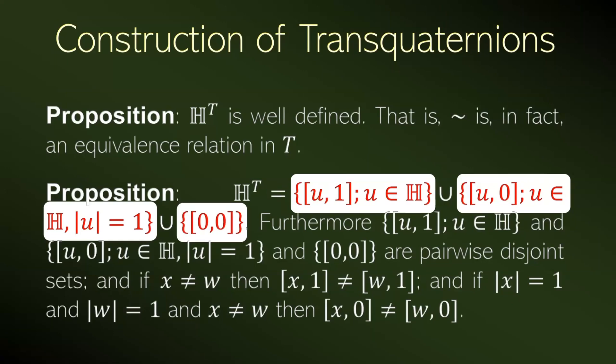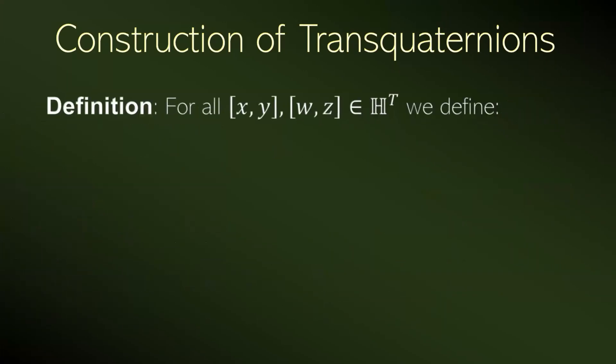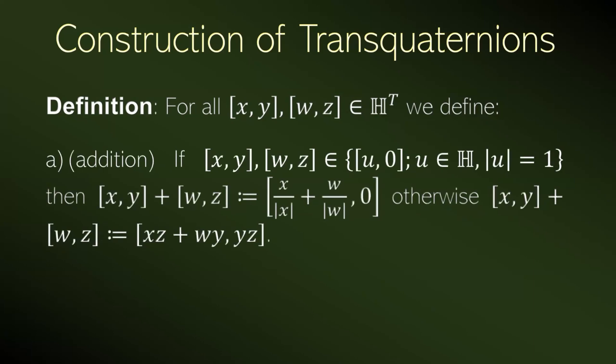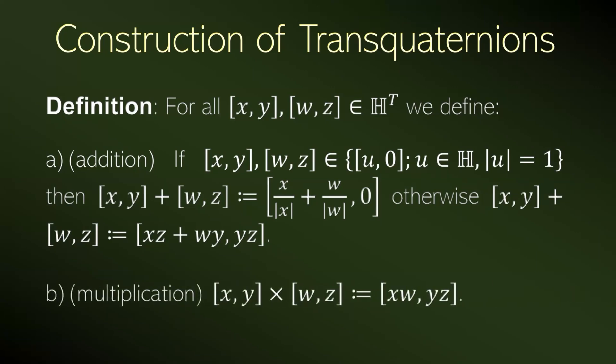Now we give an algebraic structure to this set. We define, firstly, the addition. The sum between two classes of the kind where the second coordinate is 0 is defined by the class whose second coordinate is 0 and whose first coordinate is the sum between the first coordinates with modulus 1. And the sum between any other classes is defined in a similar way to the sum of fractions. The multiplication is defined by the product coordinate to coordinate.